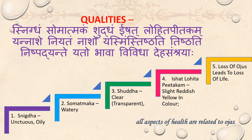Qualities of Ojas: Snigdha (oily), Somatmakam (watery), Shuddha (clear), Eeshad Lohitha Peetakam (slightly reddish-yellow in color). Loss of Ojas leads to loss of life, and all aspects of health are related to Ojas.